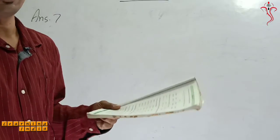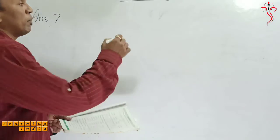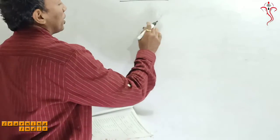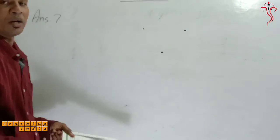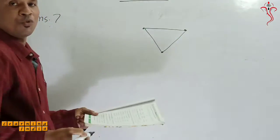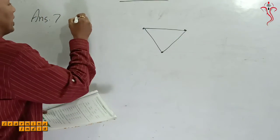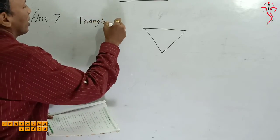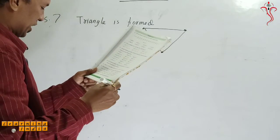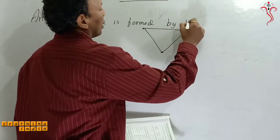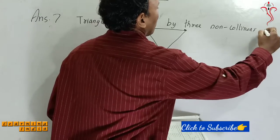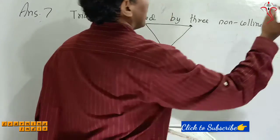Which figure is formed by 3 non-collinear points? Collinear means 3 points on one line. Non-collinear means the points are not on one line - one point here, one point here, one point down. So these are 3 non-collinear points. If we join 3 points, what is formed? A triangle is formed. So we write here: triangle is formed by 3 non-collinear points.